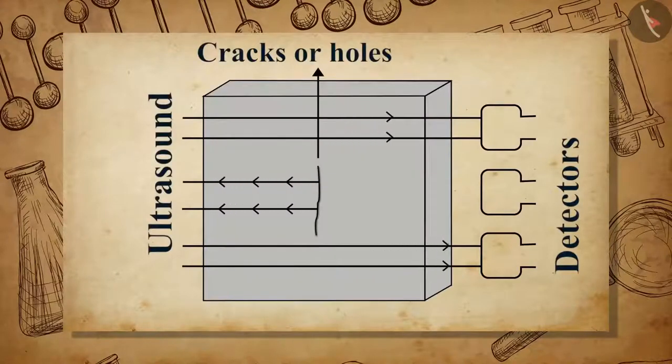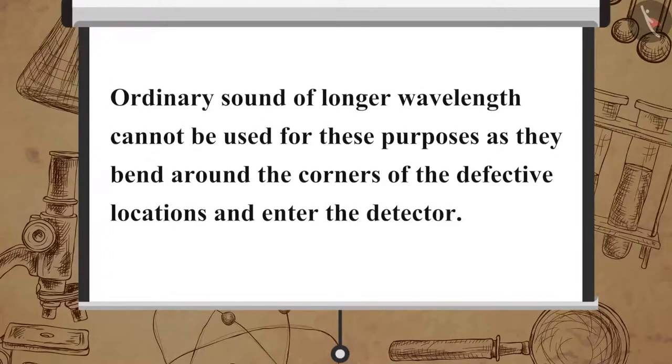Ultrasonic sounds are passed through the metals to check the presence of any holes or cracks, and detectors are used to detect any transmitted waves. Ordinary sound of longer wavelength cannot be used for these purposes, as they bend around the corners of the defective locations and enter the detector.